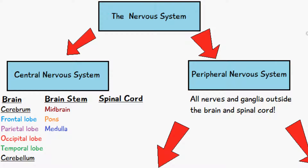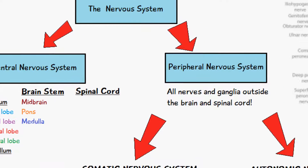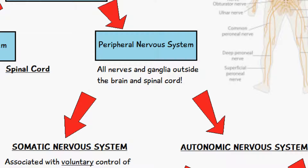I'm going to be making a separate video on the specific functions of all of these components, but just to summarize: all of these components, which you can see here, all receive information from other parts of the body and coordinate a certain response depending on their location and what they control. The peripheral nervous system consists of all other nerves and ganglia which are outside of the brain and the spinal cord.